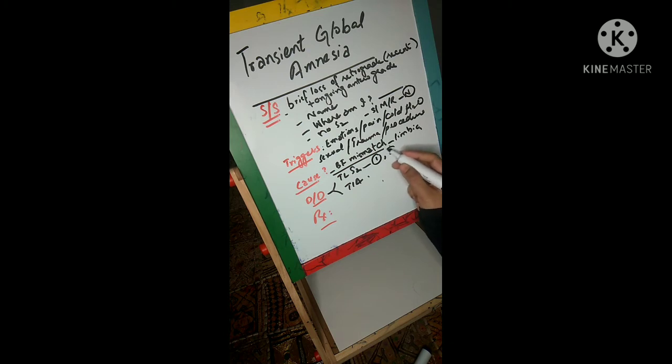And the other is transient ischemic attack. You can differentiate between temporal lobe seizures and transient global amnesia.